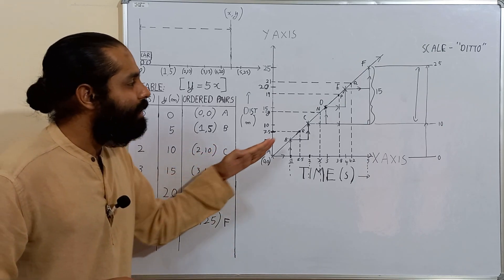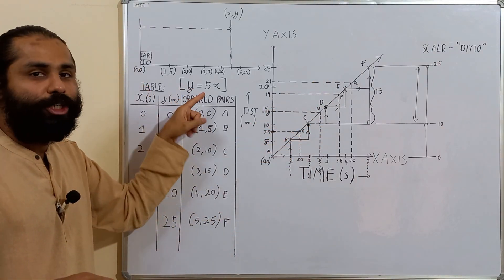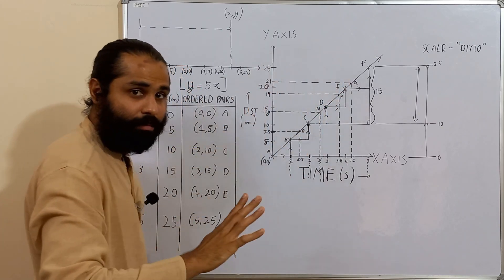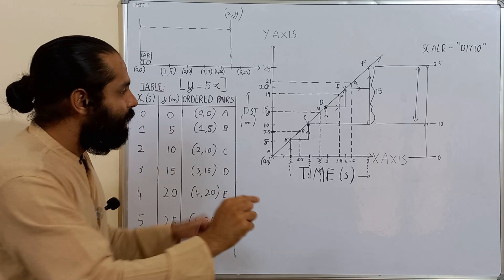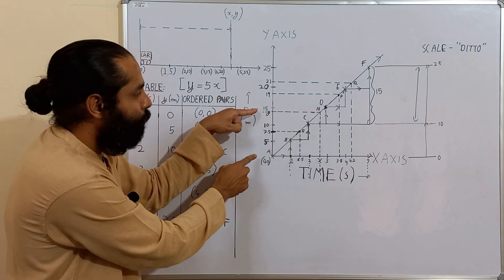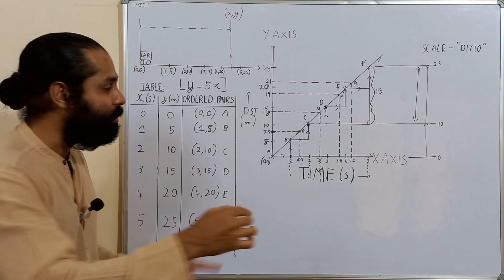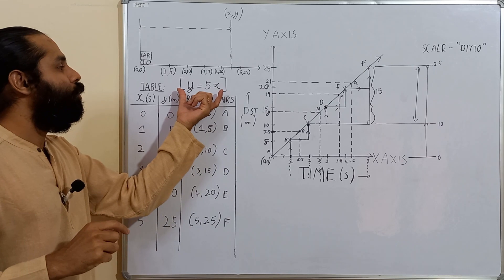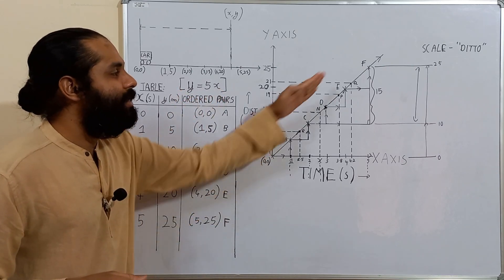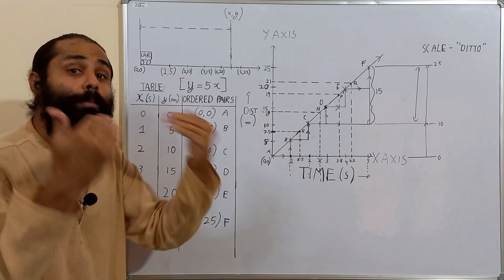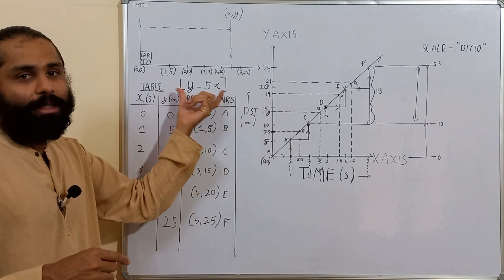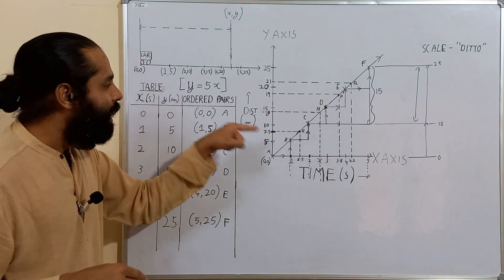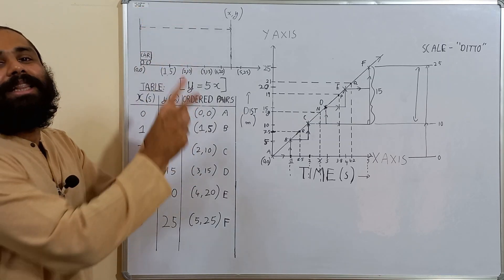In the last class, we used the idea of constant rate of change for a straight line graph to prove that for an experiment like the car moving on a straight road with fixed speed, we get an equation of the form y = 5x. When you plot this equation, you get a straight line. What it means for this line to be the graph of this equation is that for any point on this line, the y-coordinate is five times the x-coordinate — all the points satisfy y = 5x.